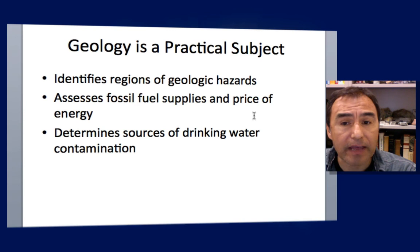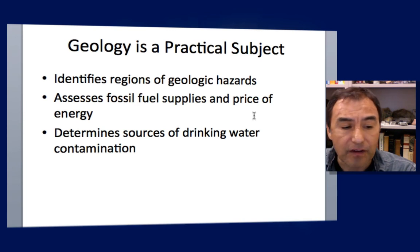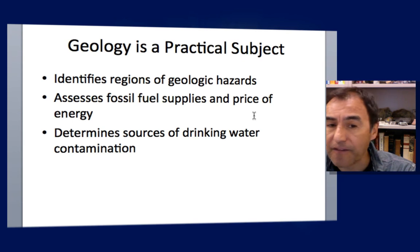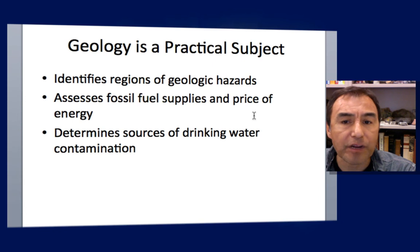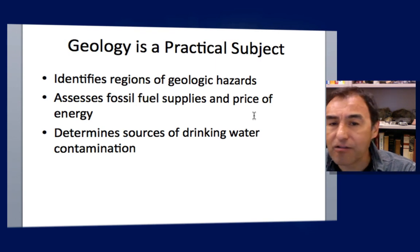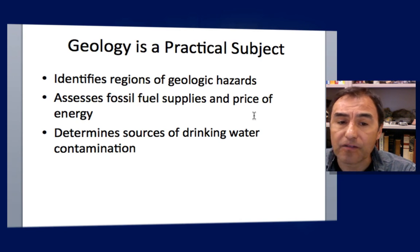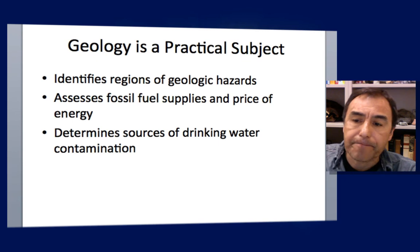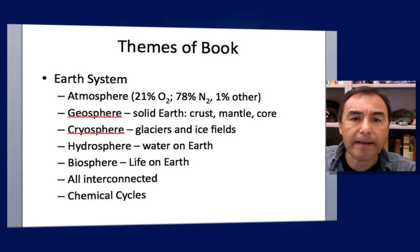Geology is a practical subject. It identifies regions of geologic hazards and assesses the supply of fossil fuels. The price of fossil fuels has really fluctuated in the last few years — a couple of years ago a barrel of oil was up at $120, earlier in 2016 it was about $30 a barrel, and now it's about $50 a barrel. That's changing based on the supply and accessibility of these resources.